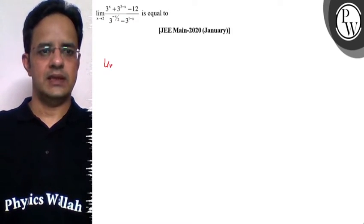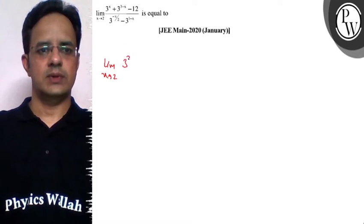So the problem is limit x tending to 2, it is 3 raised to power x plus it can be written as 27 into 3 raised to power minus x minus 12.